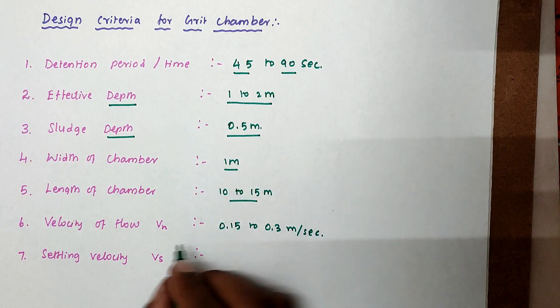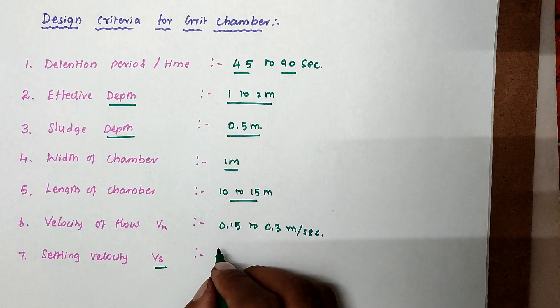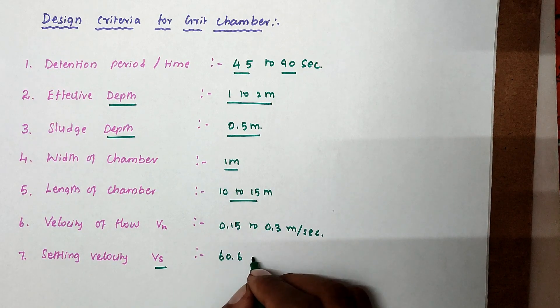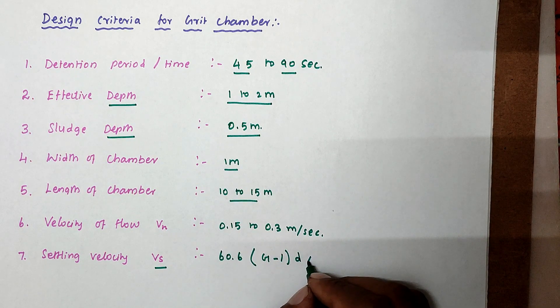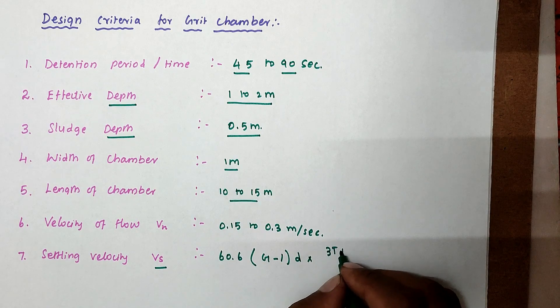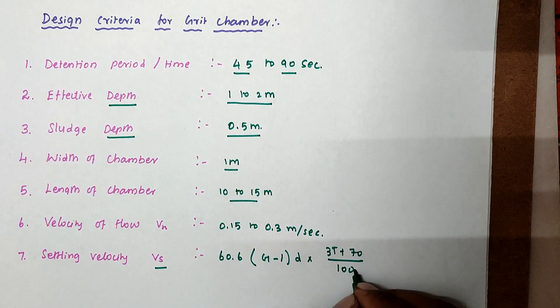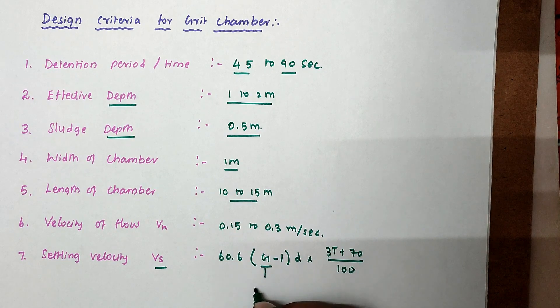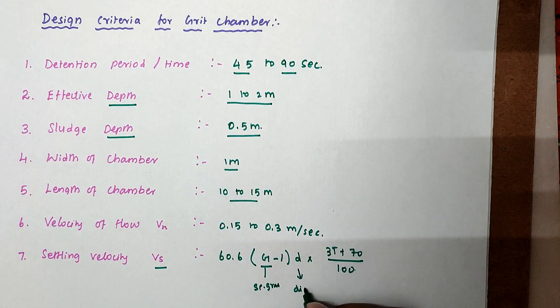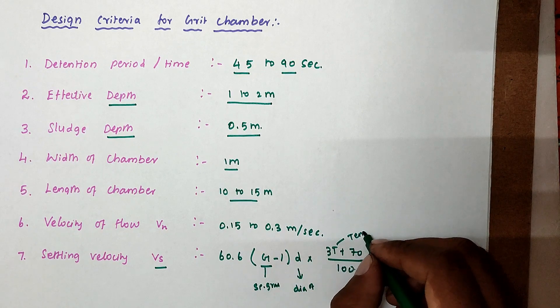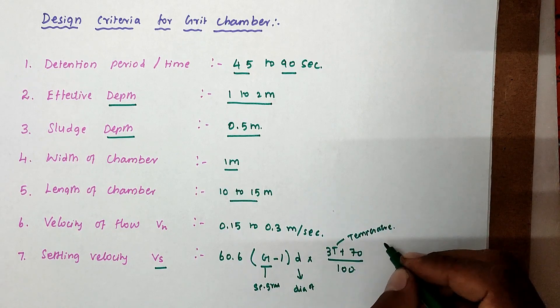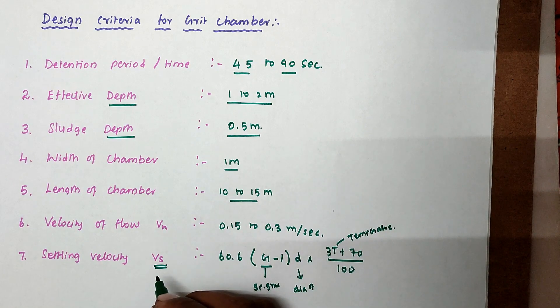Then settling velocity Vs. The settling velocity we can find out from the formula: 60.6 × (G-1) × D³ / (T+70) / 100. Where G is specific gravity, D is diameter of particles, and T is temperature. From this relationship we can find out the settling velocity of the grid chamber.